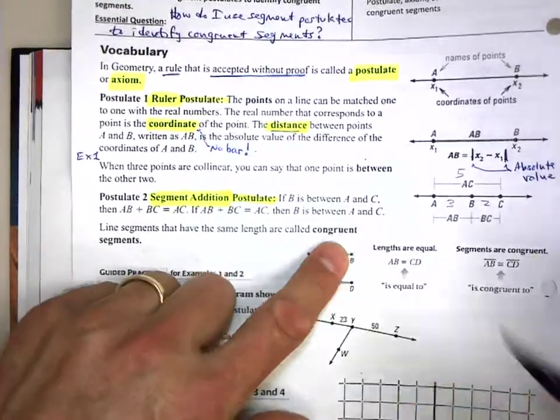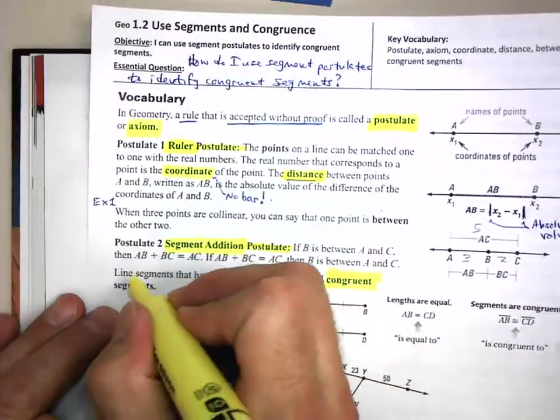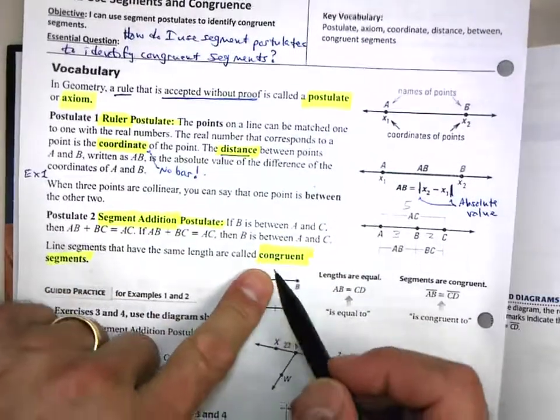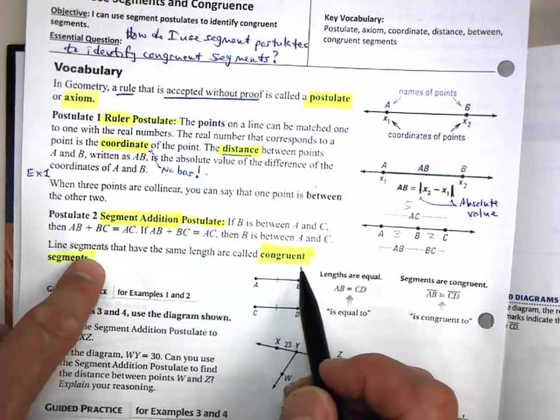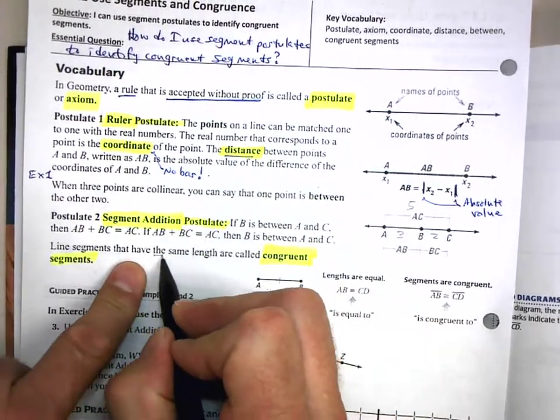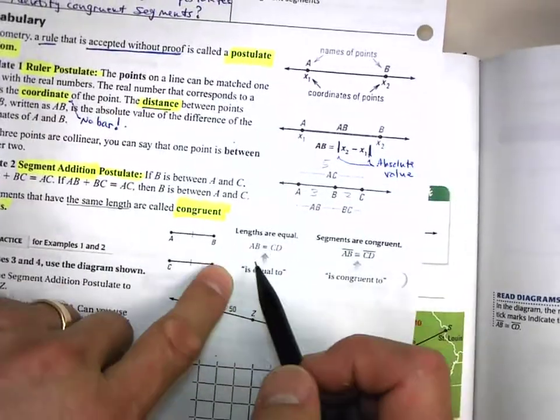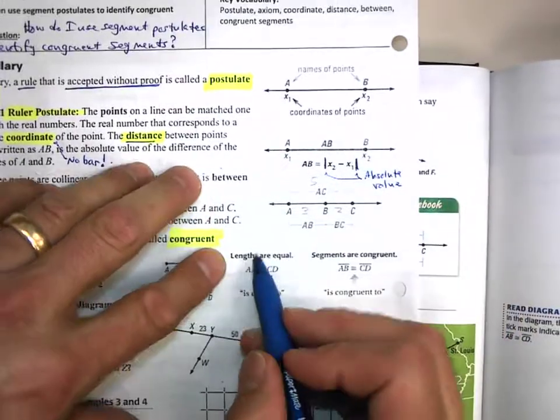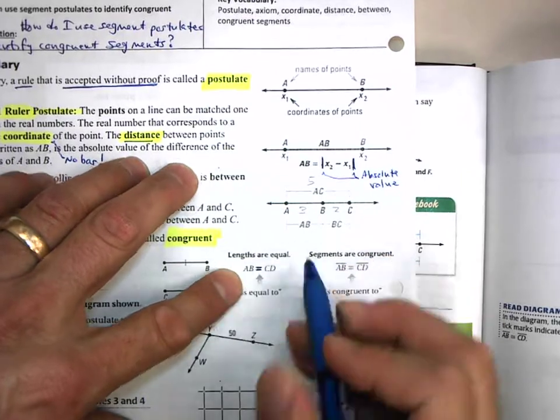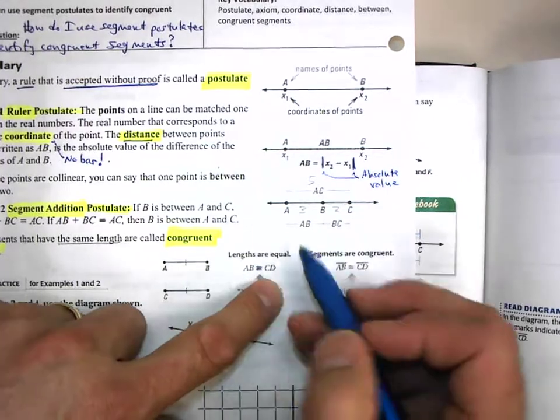Line segments that have the same length are congruent. That's a big word for us—we're going to use that over and over, hundreds of times. Congruent. In order for segments to be congruent, they have to have the same length, the exact same length.